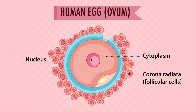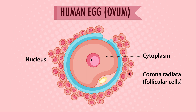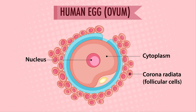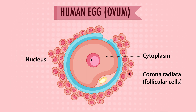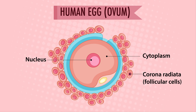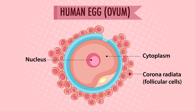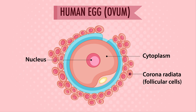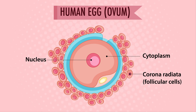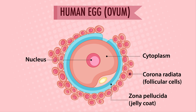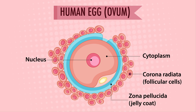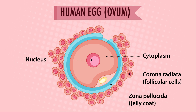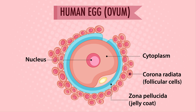The corona radiata encircles the egg and is made up of two or three layers of follicular cells. They are affixed to the zona pellucida — the egg's outer protective coat — and their principal function is to provide the cell with essential proteins. The egg's exterior membrane is known as the zona pellucida, or egg wall.